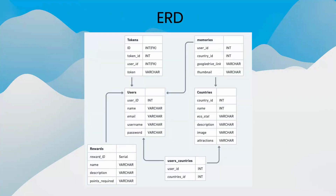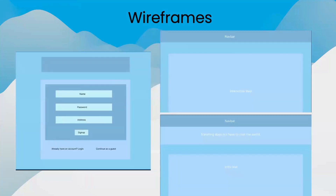This is our ERD, which consists of six tables. We wanted to get a clear understanding of exactly what we would need in our database so we could get the correct file structure right from the beginning of the project, just to make sure that the project ran as smoothly as possible from start to finish. I'll now pass you over to Abby, who will take you through the wireframes and give you a demonstration of our app.